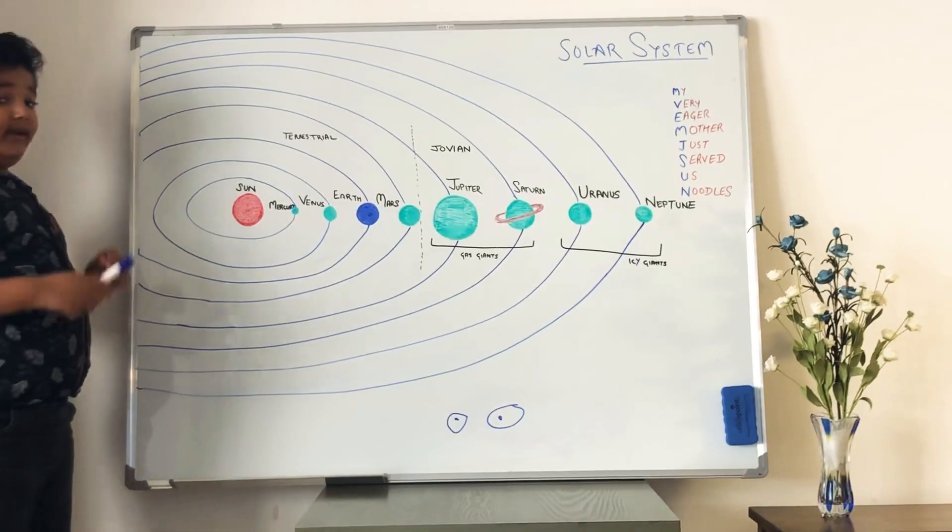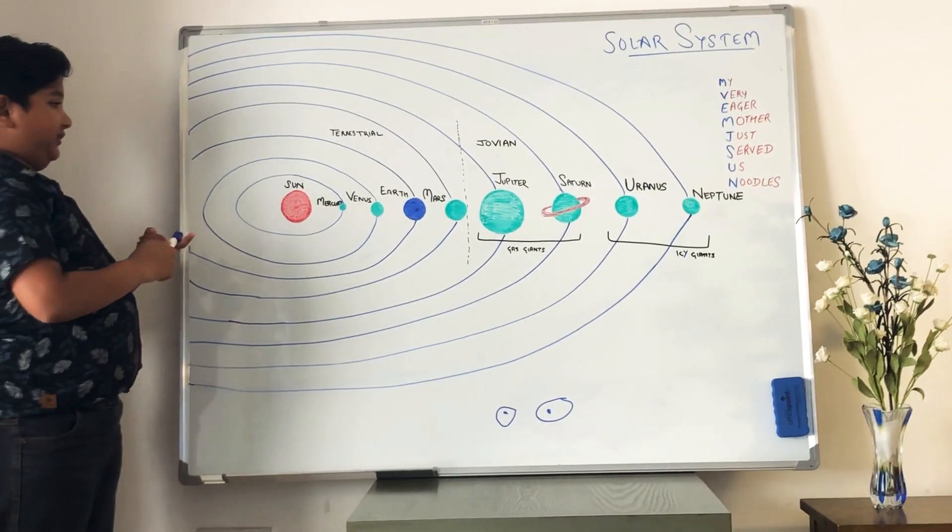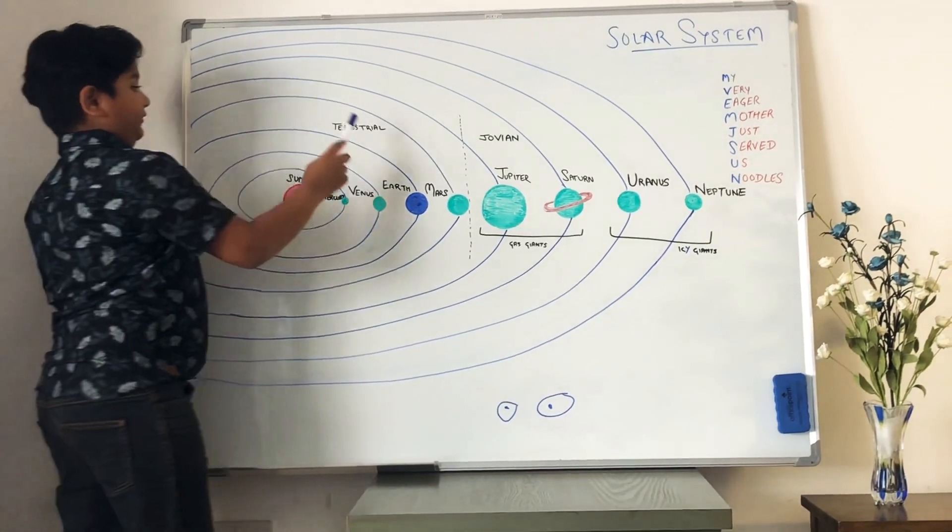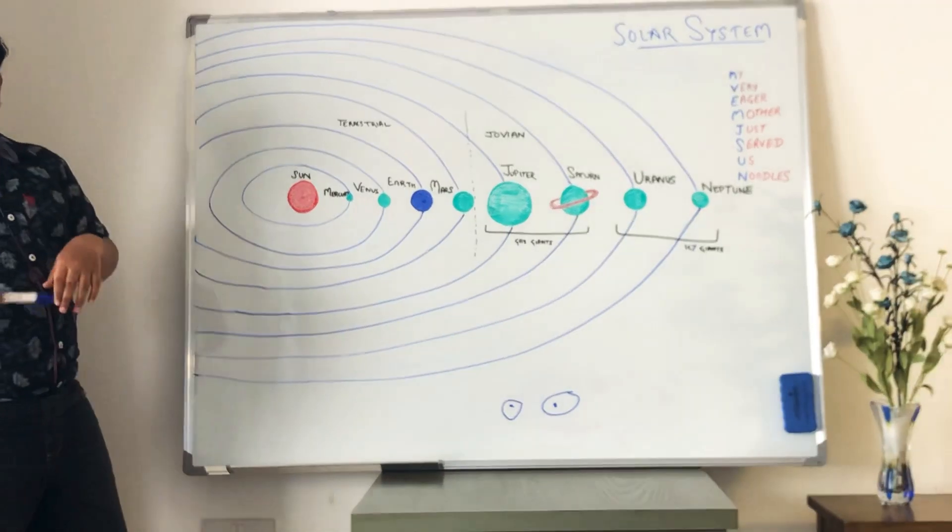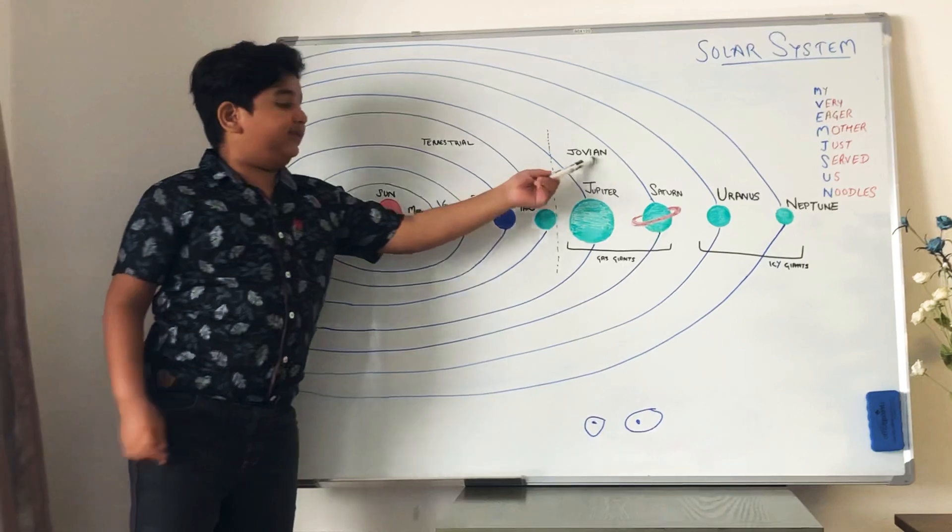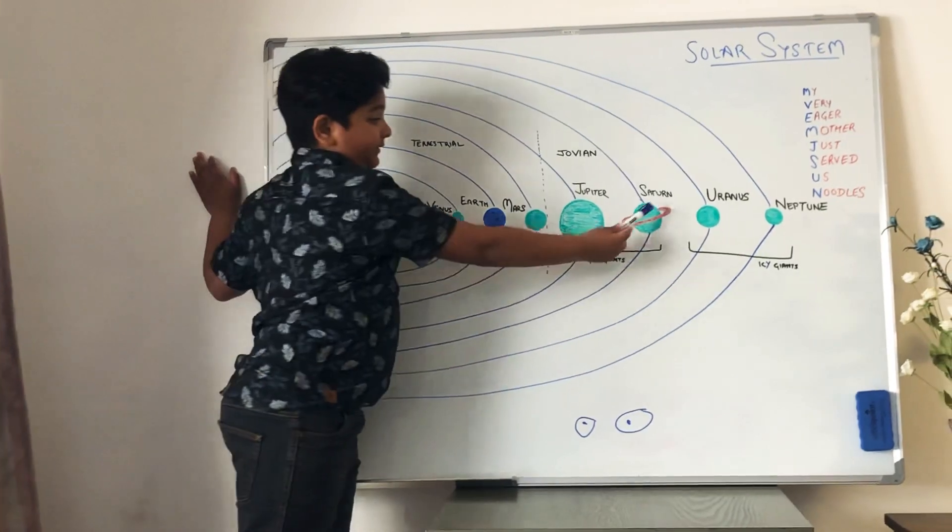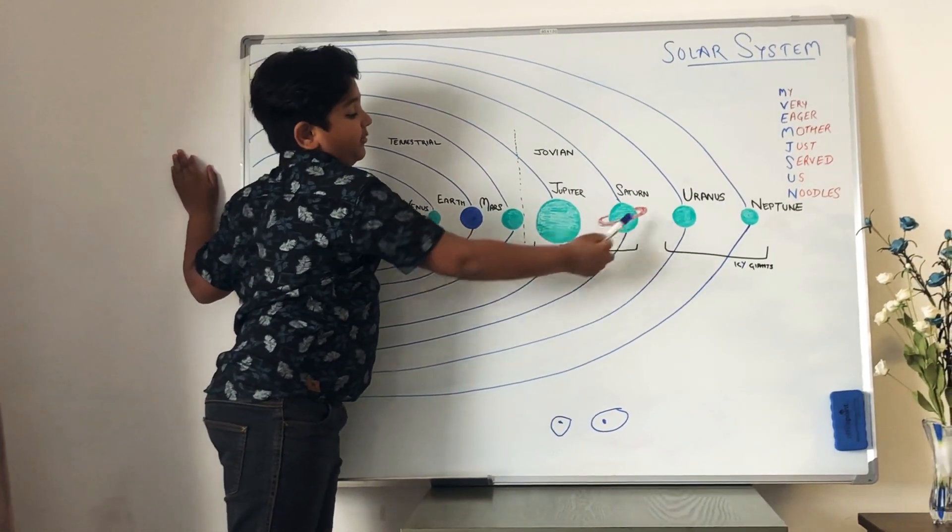And there are ring support systems in Jovian planets and terrestrial planets have no ring support system. Example, in Jovian planets, there are ring support systems like Saturn. Saturn has a ring support system.